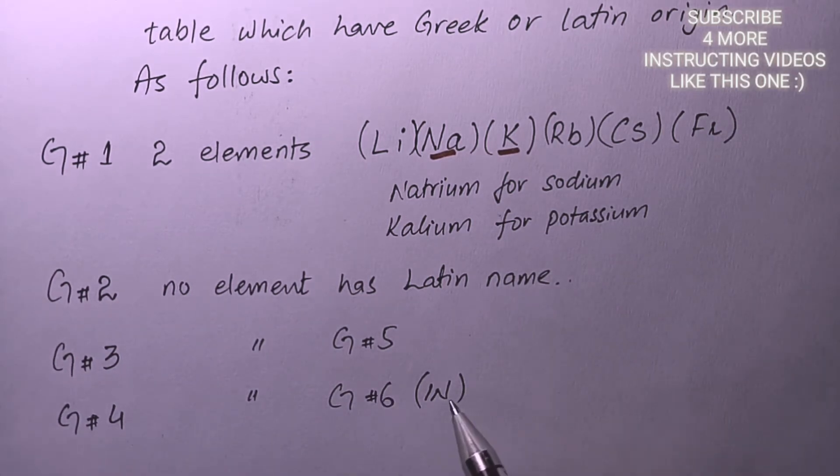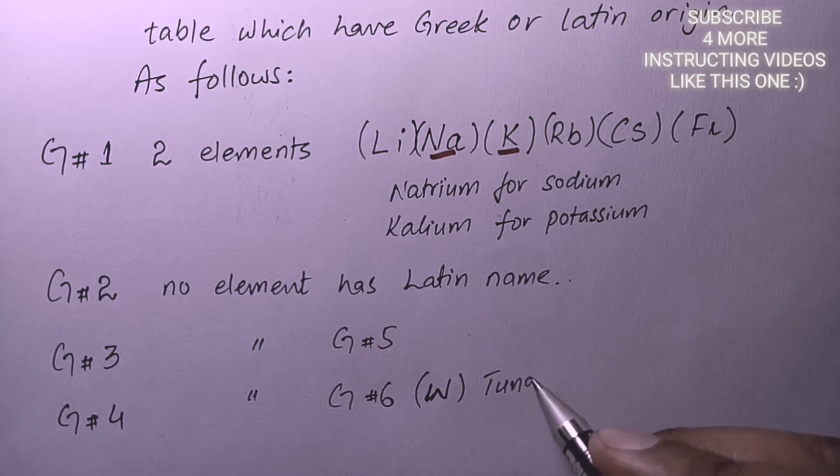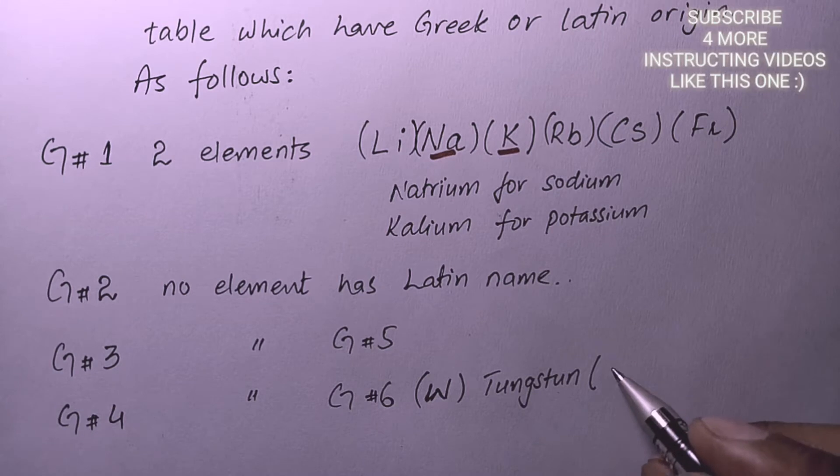Let's talk about group 6. There we have an element which is symbolized as W. It is known as tungsten, but its Latin name is Wolfram.